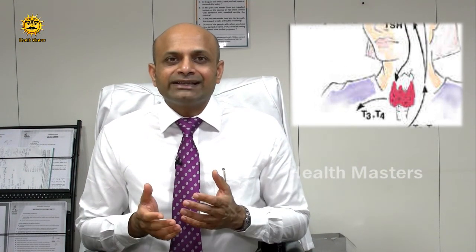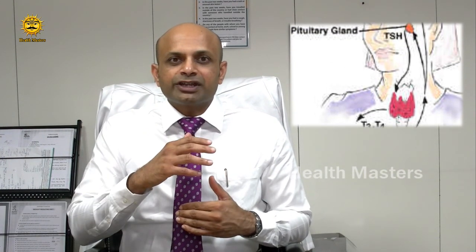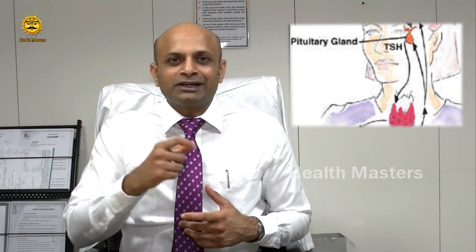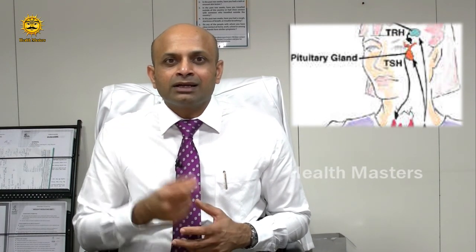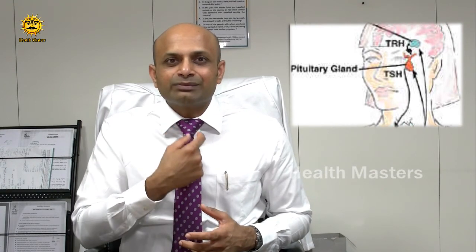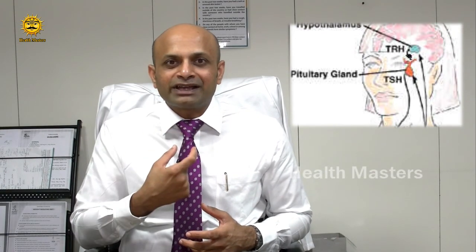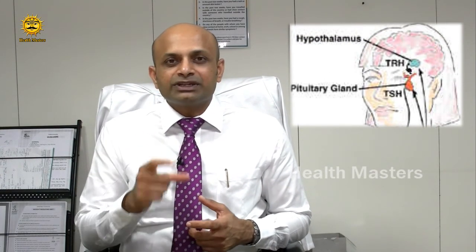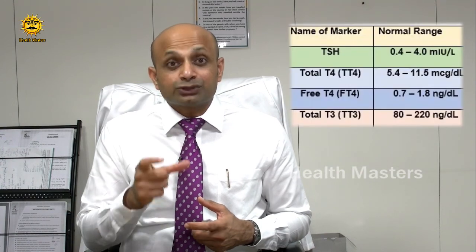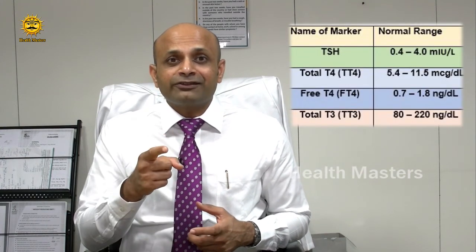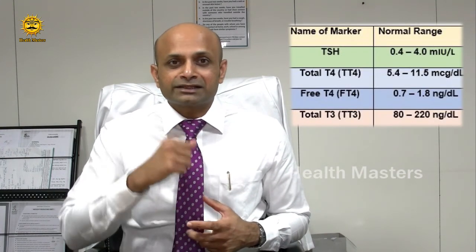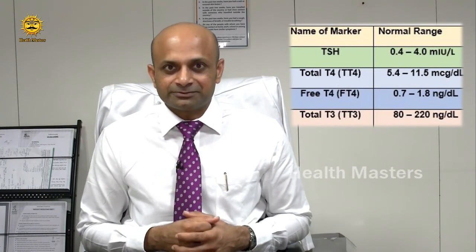T4 and T3 are inversely proportionate to another hormone called TSH, which is produced by the pituitary gland. The pituitary in turn stimulates the thyroid to secrete T4 and T3. So T4 and T3, the actual thyroid hormones, are inversely proportionate to the TSH hormone levels in the blood.